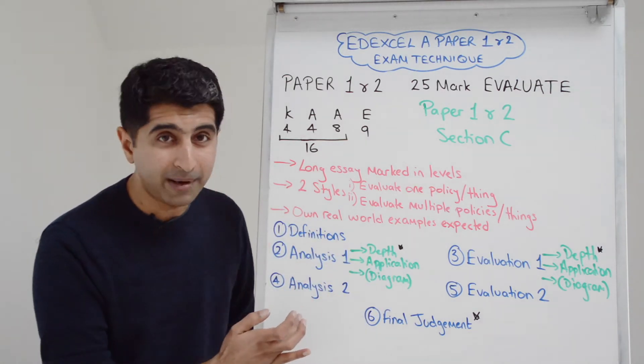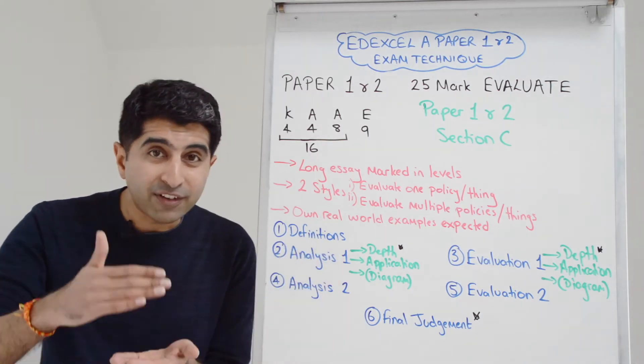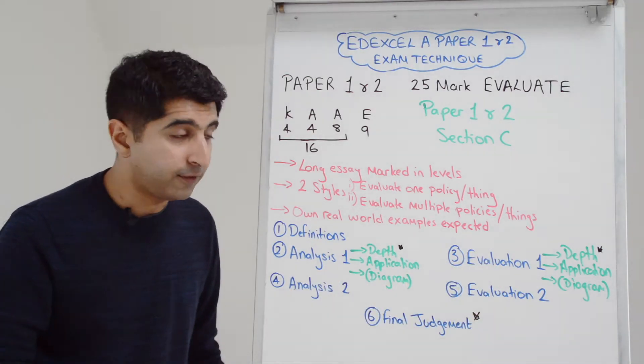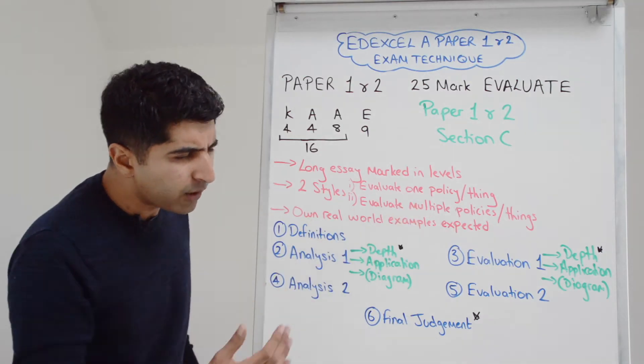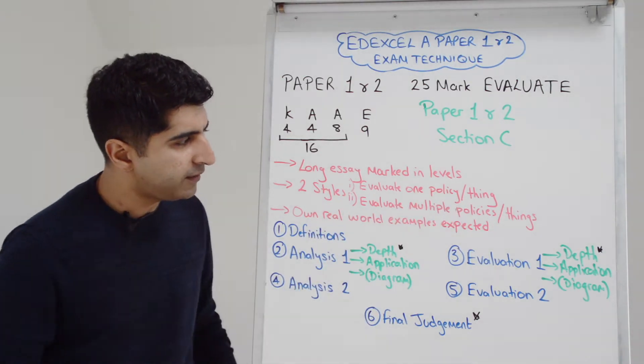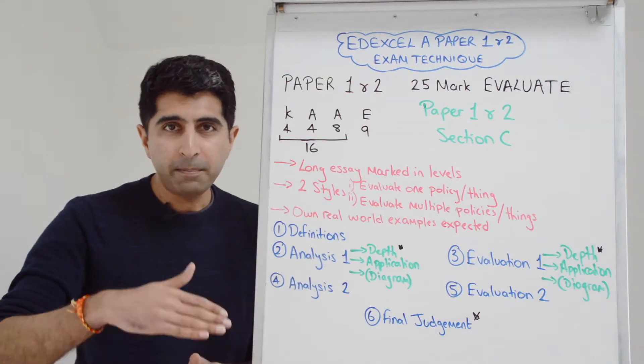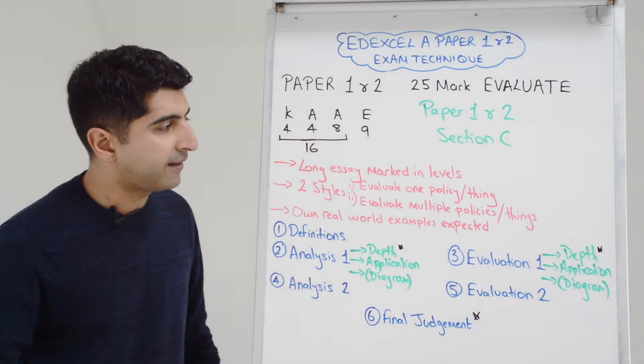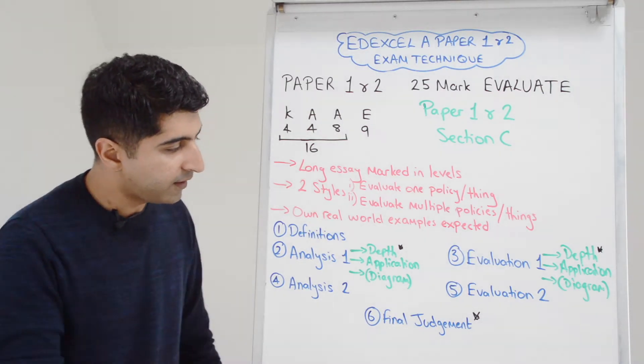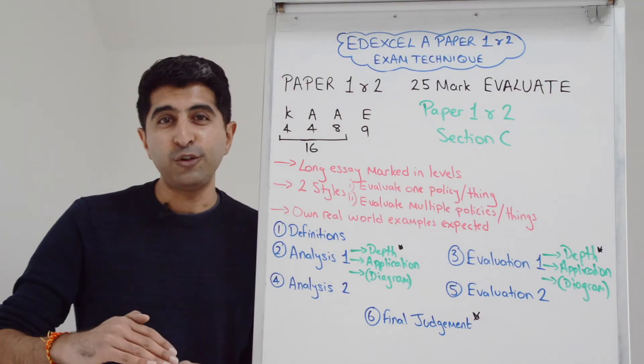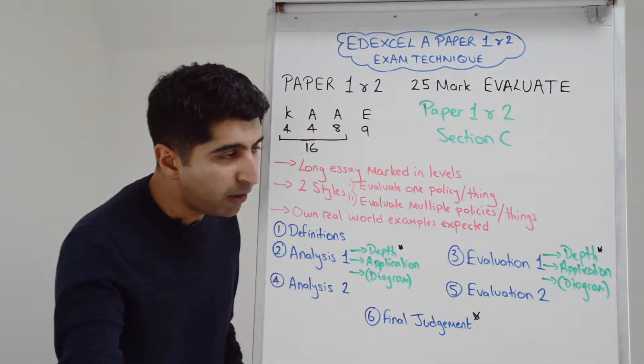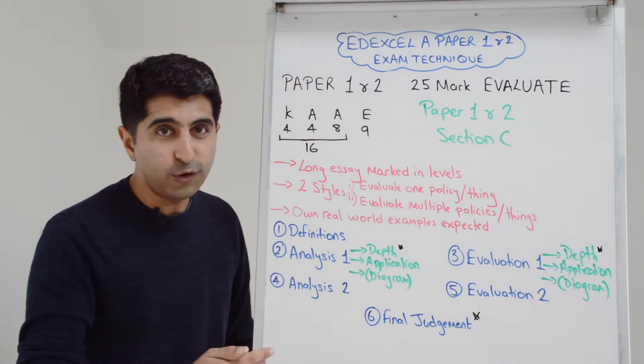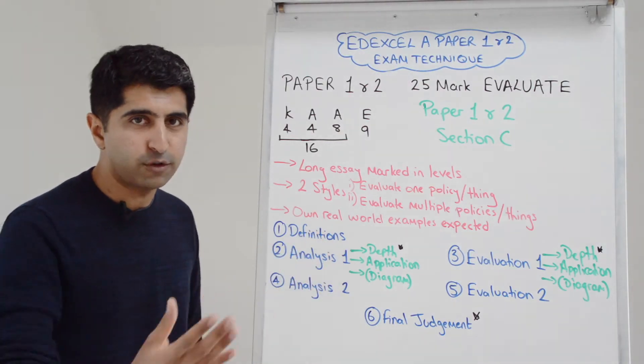So there's your analysis. You do that a second time later. What's unique on this 25 marker is that after each of your analysis paragraphs, you must evaluate. So overall two evaluation paragraphs, one that follows analysis one, one that follows analysis two. Now can you see how the structure fits no matter what the style of the question is? If the question says evaluate one policy or one thing, analysis one is your pro, analysis two is your con. But if the question is evaluate multiple policies or multiple things, analysis one is policy one, analysis two is policy two.